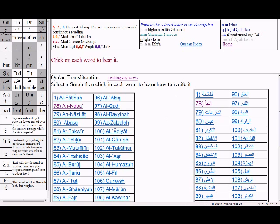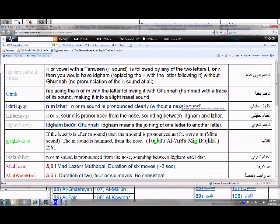In most of the pages of the website you will find in the upper side the rules of tajweed. For example, in this part is hamzat al-wasl. If you put the cursor over a letter you will find how it is pronounced, and in this section we have the complete description of the tajweed rules.